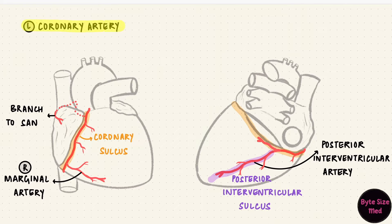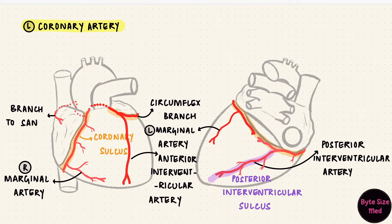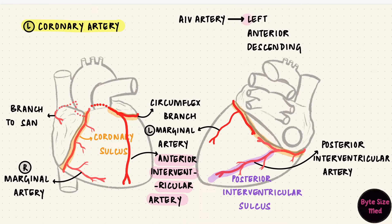Next up is the left coronary artery. It emerges from the left aortic sinus, travels behind the pulmonary trunk, and emerges between the trunk and the left auricle, where it divides into two branches: the circumflex artery and the anterior interventricular artery. The circumflex artery travels along the coronary sulcus and can give off the left marginal artery at the margin. The anterior interventricular artery — also called the left anterior descending artery, or LAD — travels downward in the anterior interventricular sulcus, giving off diagonal branches along the way.